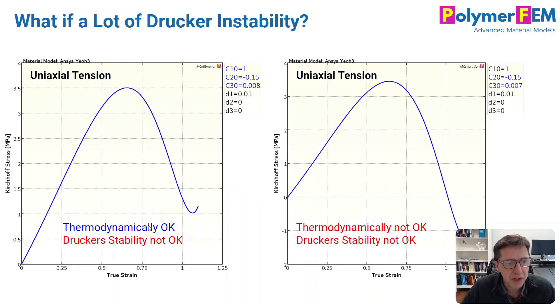So here's an example of that. On the figure to the left, I use again an Ansys-Yeoh hyper-elastic model, and this is a plot from MCalibration. The parameters here are shown to the right of the figure. The stress-strain curve, Kirchhoff's stress goes up and then it goes down. So this is not Drucker stable, but it's a thermodynamically okay material model. Everything looks good besides the drop there.